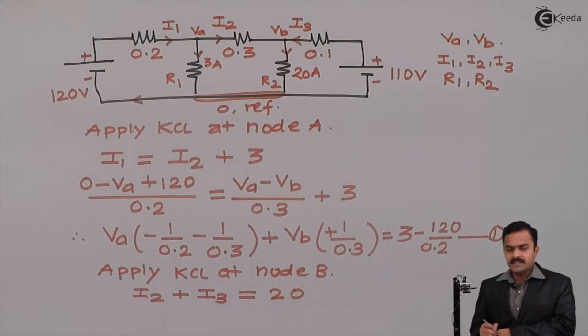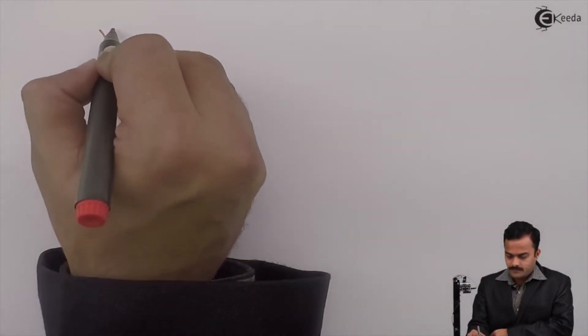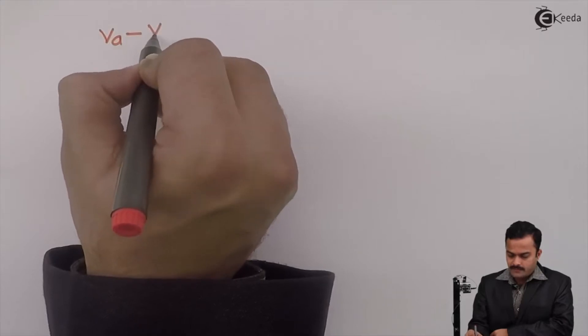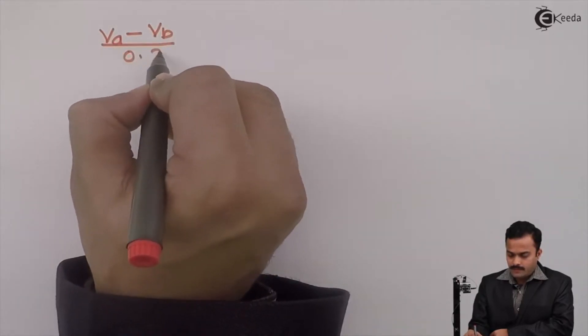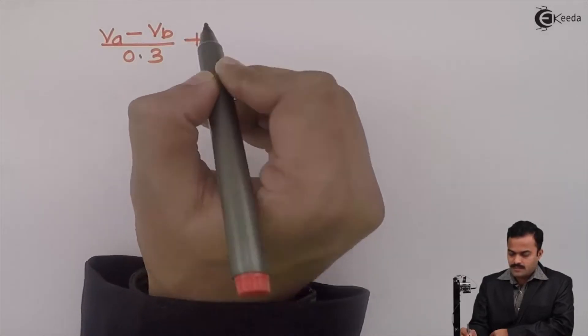Now, let's write I2, I3 in terms of Va, Vb. I will have Va minus Vb divided by 0.3 plus.